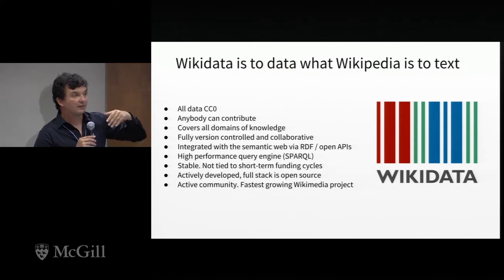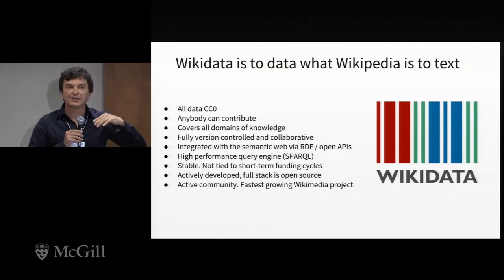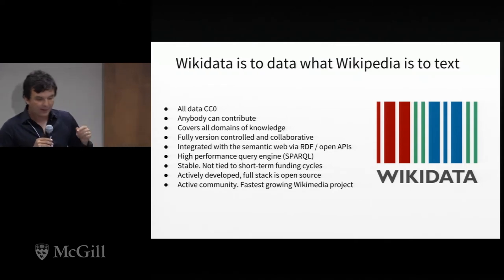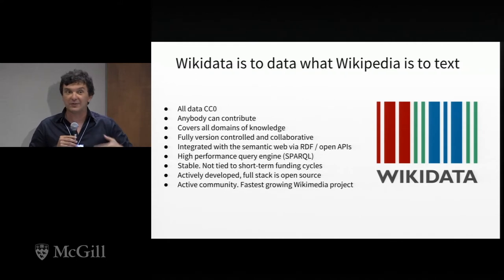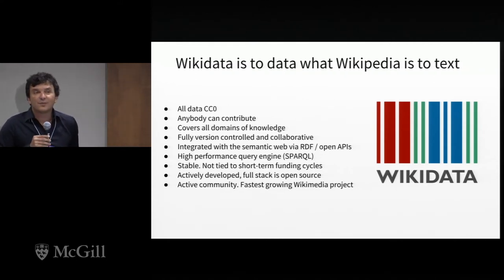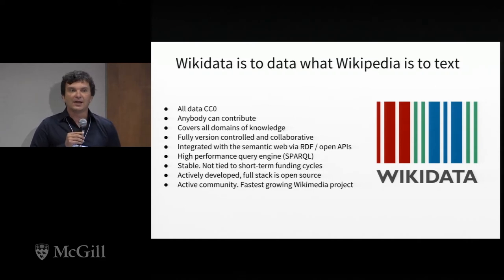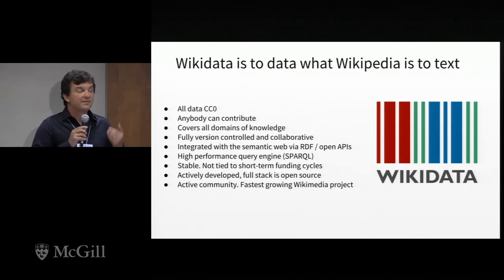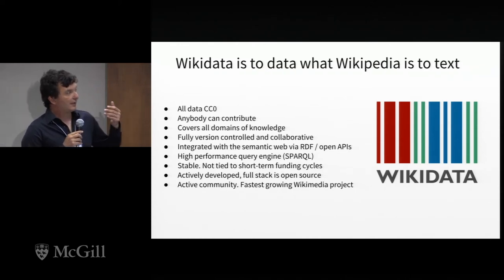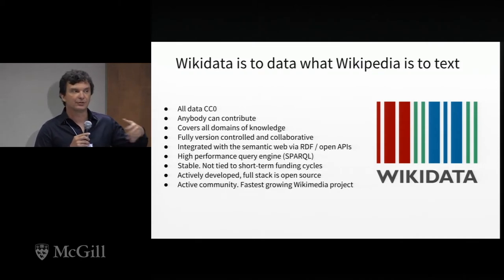At a high level, Wikidata is the data version of Wikipedia. All data is CC0, so subject to no copyright restrictions. Anybody can contribute — humans, machines, institutions. It's basically public infrastructure — not anyone's infrastructure — which is why we're really hoping you can embrace it for your projects. It covers all domains of knowledge, aspiring to be a general knowledge base about any item, anything you can name. It is fully version controlled, collaborative, and integrated with the semantic web via RDF dumps and open APIs. It has a SPARQL endpoint for those who are into querying capabilities.